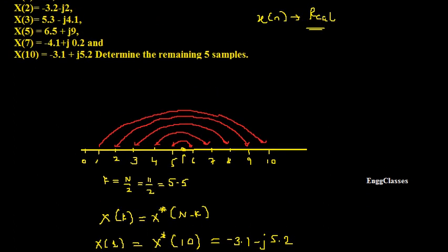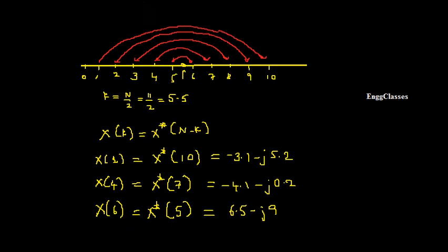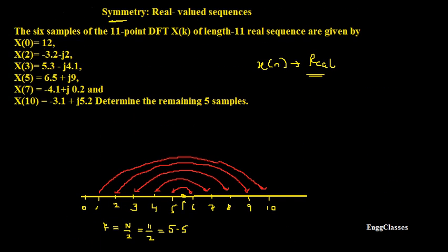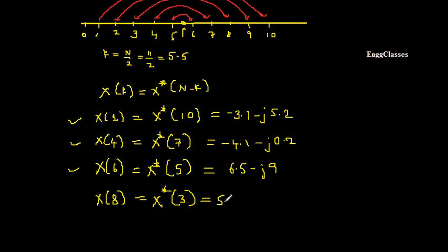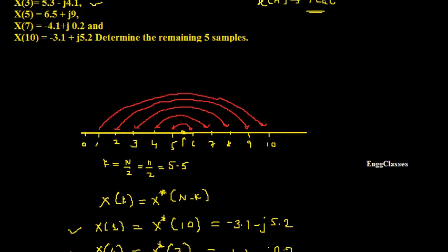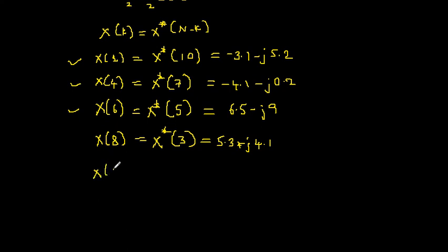Three points found so far; two remaining — X(8) and X(9). Finding X(8): X(8) = X*(11 − 8) = X*(3). X(3) is given as 5.3 − j4.1, so its complex conjugate is 5.3 + j4.1. Therefore X(8) = 5.3 + j4.1.